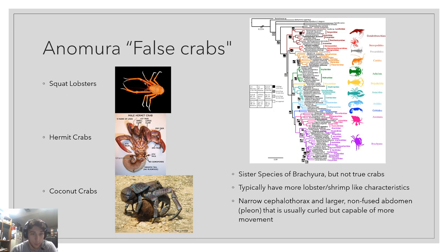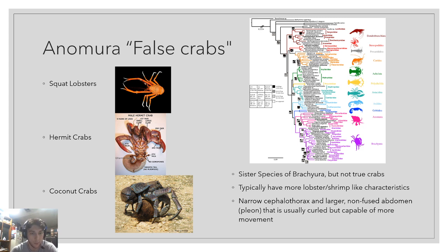It's part of Anomura — the false crabs. As you can see from this picture of a squat lobster, a hermit crab, and a coconut crab, this is the sister group of Brachyura, and they're not considered true crabs. This is because they have different characteristics and come from a different lineage. These characteristics include a much narrower cephalothorax and a larger, more segmented, more mobile abdomen. The hermit crab has the long abdomen; the coconut crab has a large abdomen tucked underneath it as a ball, but if it wanted to extract it, it could.